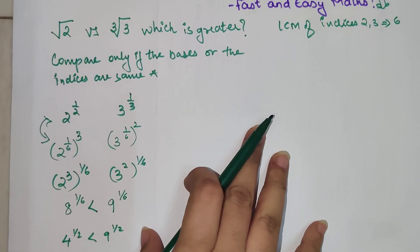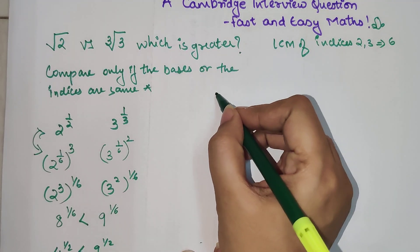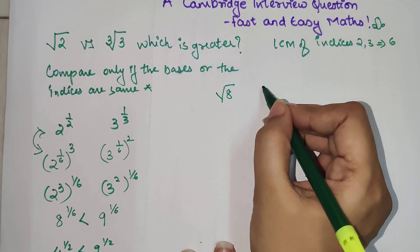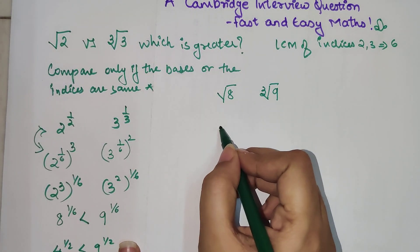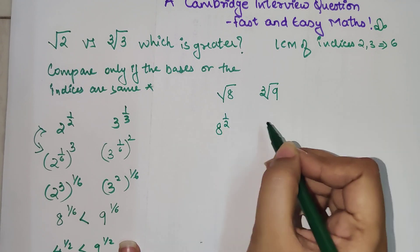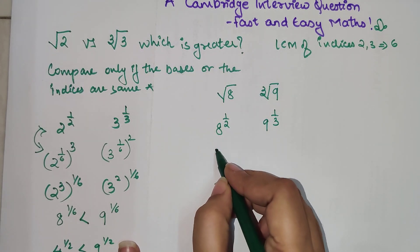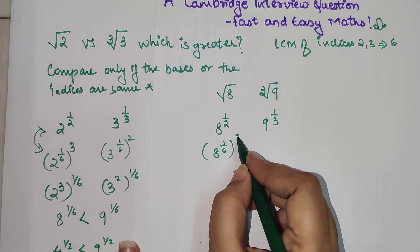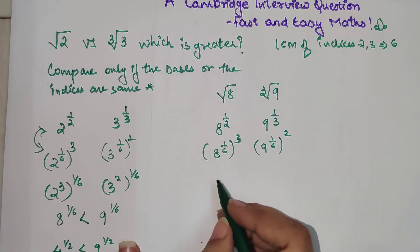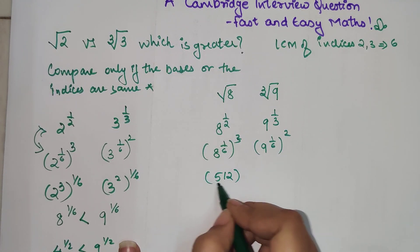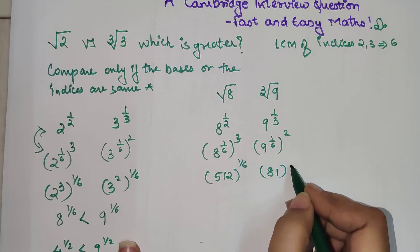Now I am going to solve another question of a similar kind. Let's see: root of 8 versus cube root of 9. Again, we can write this as 8 raised to half and this as 9 raised to 1 by 3. The LCM will be 1 by 6 the whole raised to 3, and 9 to 1 by 6 the whole raised to 2. So I get 512 the whole raised to 1 by 6, and here I get 81 the whole raised to 1 by 6.